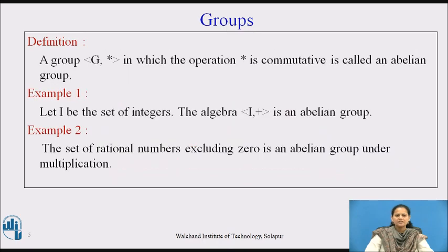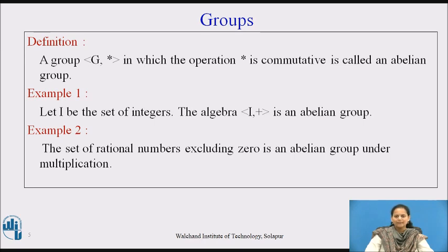The next definition, based on the earlier definition of a group: a group G, star in which the operation star is commutative is called an abelian group. We notice that earlier we defined the group with the properties of associativity, identity, and inverse element. Now, in addition to these three properties, if star is an operation which is also commutative, then the group is given the special name termed as an abelian group.